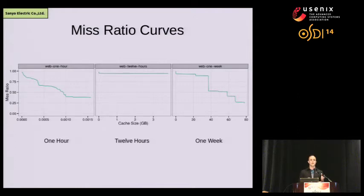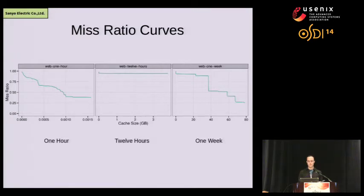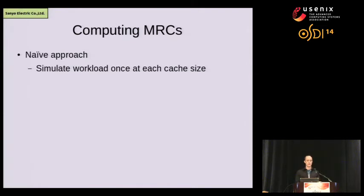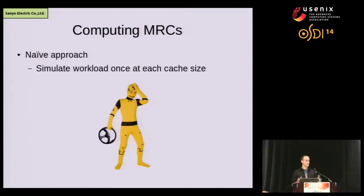The fact that these curves are tied very closely to specific workloads and change over time tells us that if we want to use these curves to make online decisions, we have to be able to compute the curves themselves online. So how do we compute MRCs? The naive approach is to simulate a workload using LRU once at each cache size you're interested in, compute the miss rate at that point, and plot it. But this requires many simulations and is not feasible for online computation.